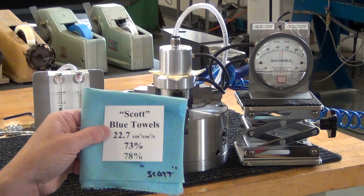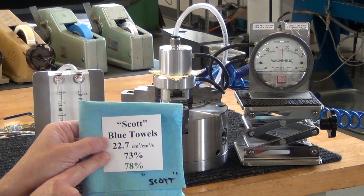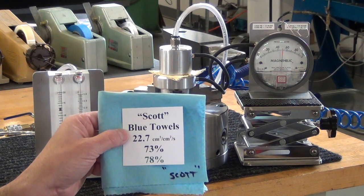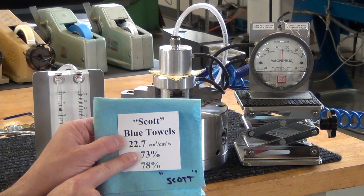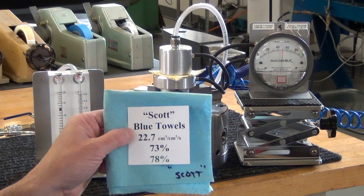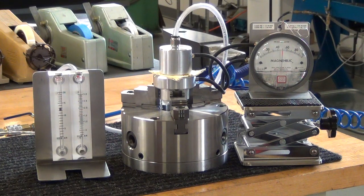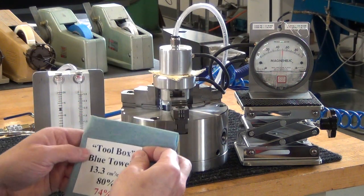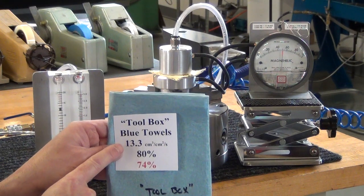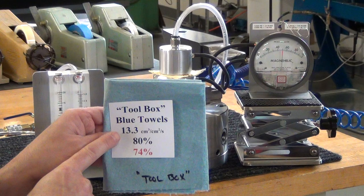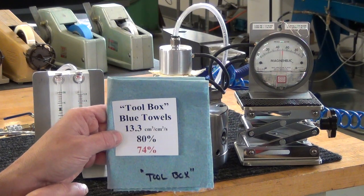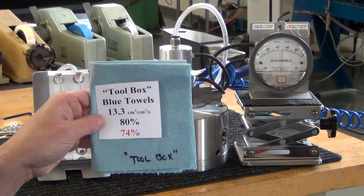Scott Blue Towels tested at 73% for two layers. When corrected — using maybe three layers to match cotton breathability — the corrected efficacy goes up to about 78%, so Scott Towels look even better under this method. Toolbox brand had the opposite effect: even though they had an excellent filtering efficacy at 80%, their permeability was lower and harder to breathe through. Corrected for that, they drop to 74%. Both blue towel brands are pretty good, but Toolbox is a bit harder to breathe through.